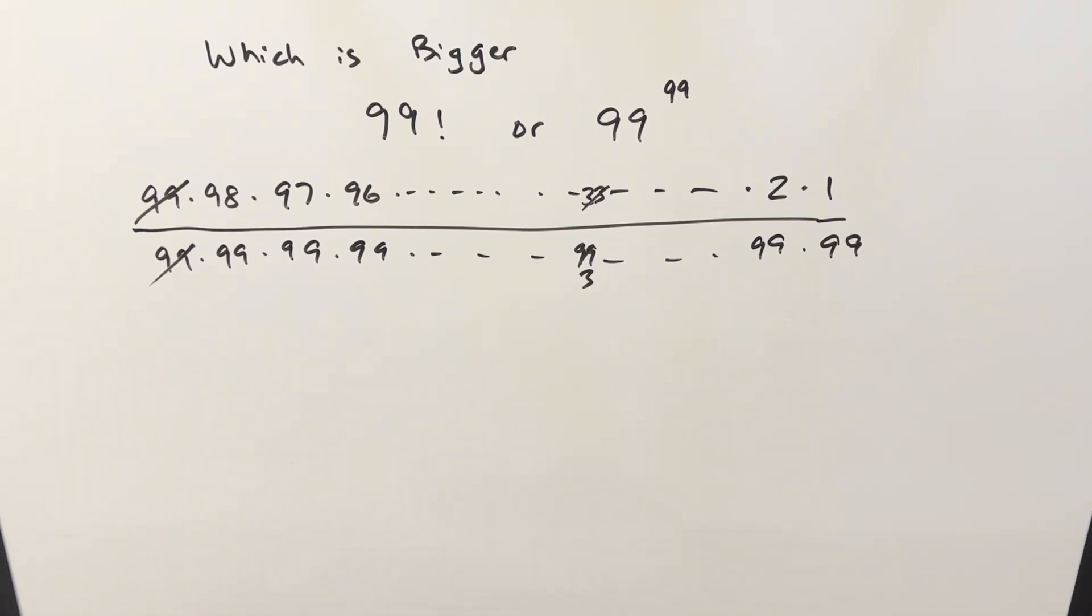But really the point of writing it out like this, if we just look at terms one at a time, we notice this is less than 1, this is less than 1, the denominator is always larger and of course it's much less than 1 here.